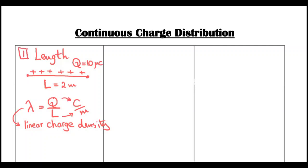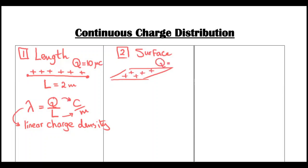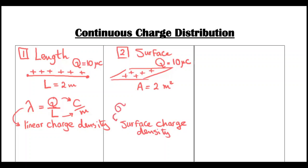The second type of charge distribution is when the charge is distributed over a surface. We have a sheet that is uniformly charged with total charge 10 microcoulombs and area two meters squared. We calculate the surface charge density, called sigma (σ), which is the charge in one meter squared. Sigma equals Q divided by the area, and its unit is coulombs per meter squared.